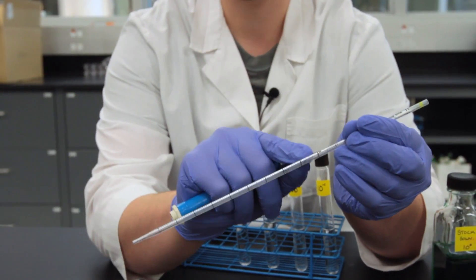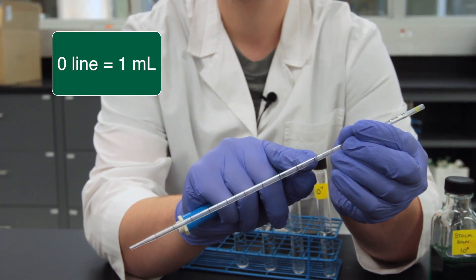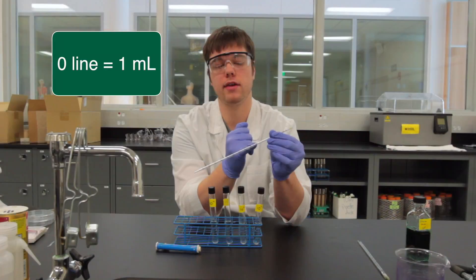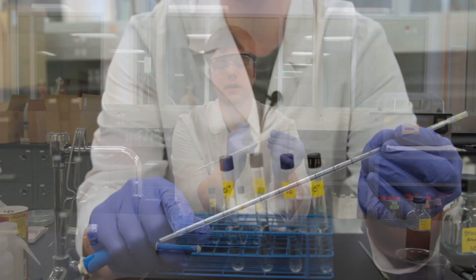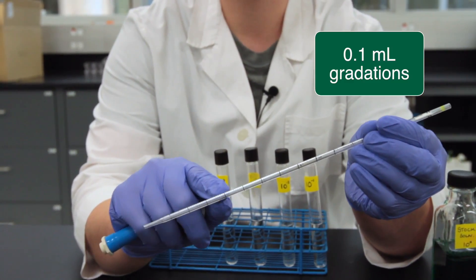The zero line indicates that if you draw liquid up to that line, 1 mil is present in that pipette. These gradations are 0.1 mil.